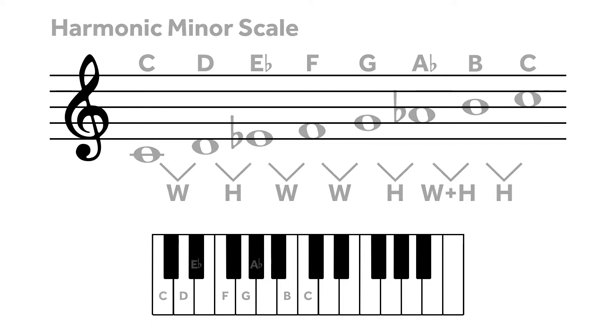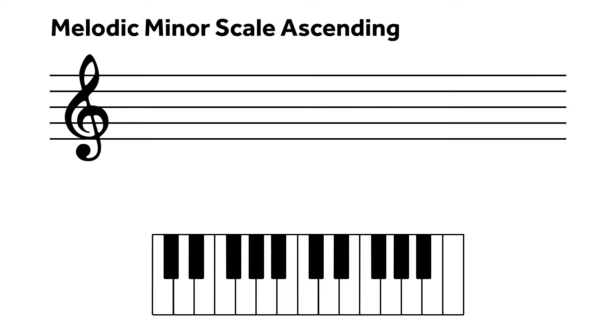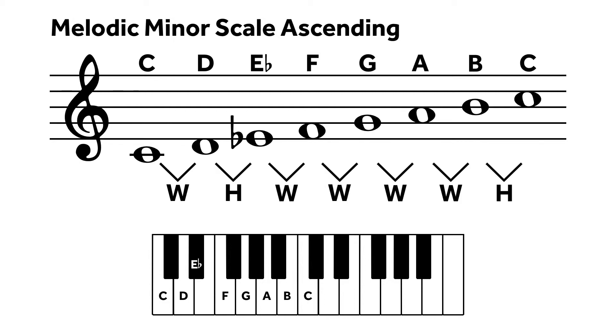The melodic minor has two different patterns, one for the ascent and one for the descent. The ascent is whole, half, whole, whole, whole, whole, half.